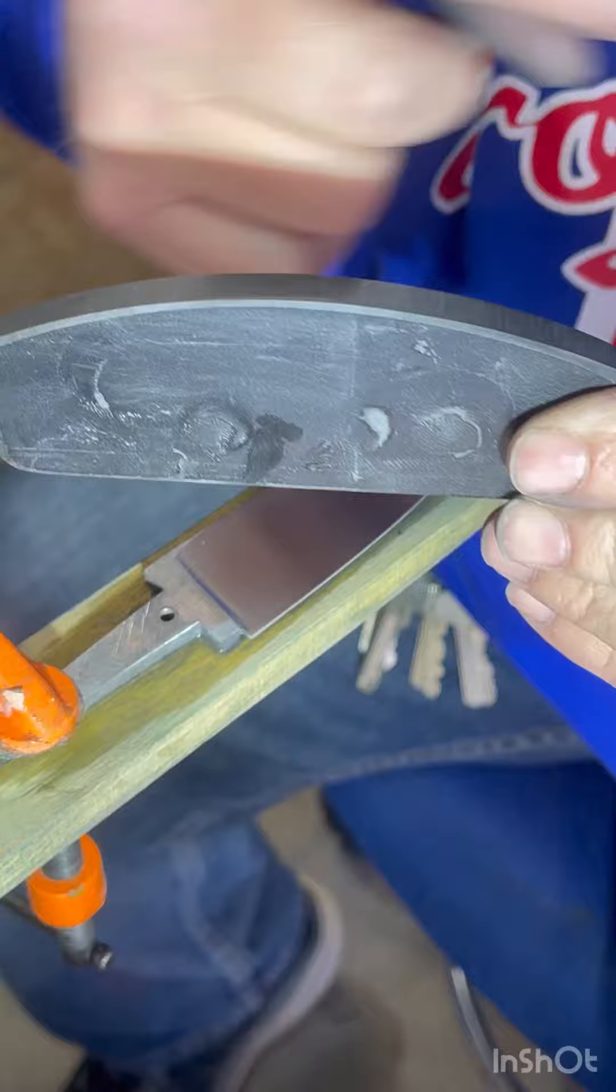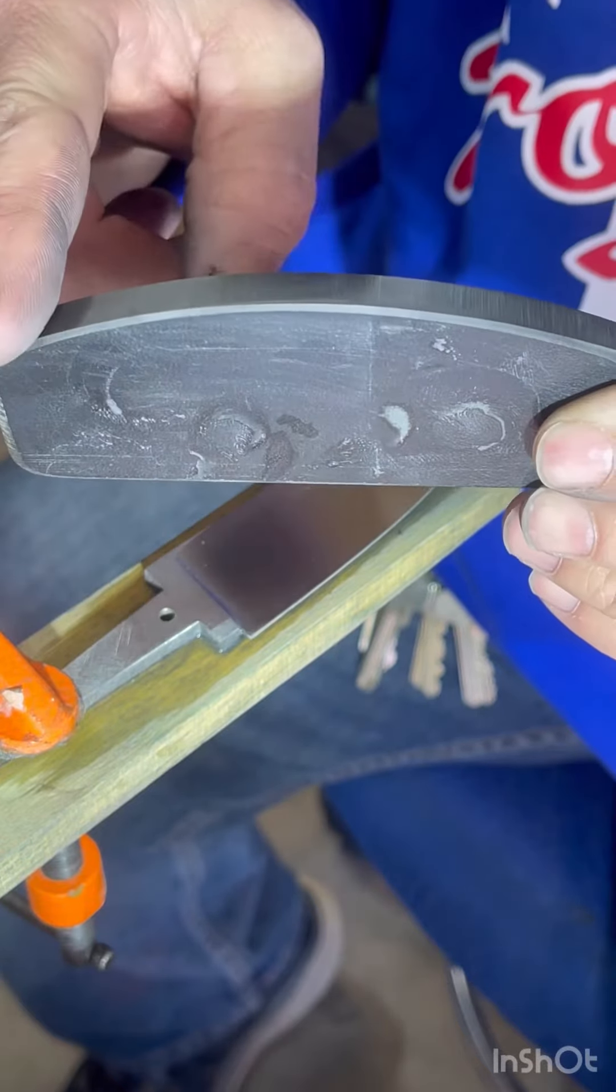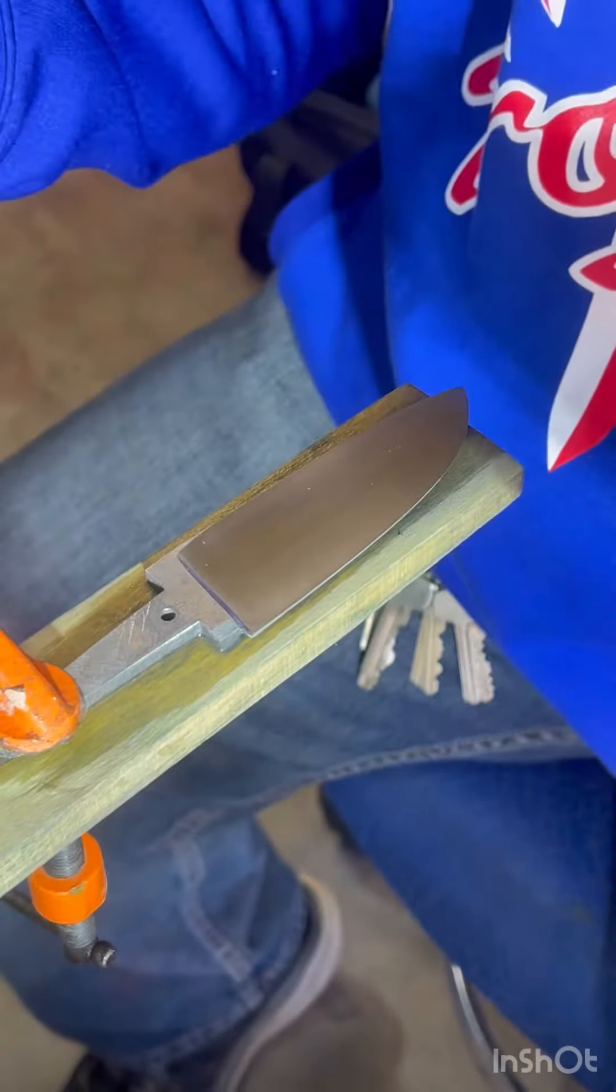I just trace the side of the wheel and I transpose that onto this piece of G10, and that's it.